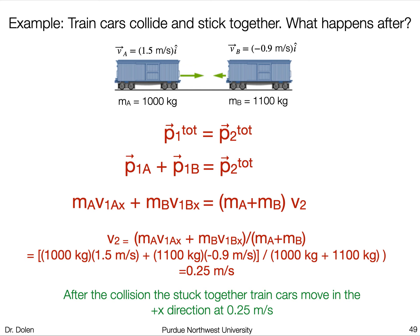Let's look at the problem picture a little bit. The train car moving to the right has a mass of 1,000 kilograms, and we've defined it to be moving in the plus x direction with a speed of 1.5 meters per second. Train car B is moving to the left, which we define to be the negative x direction, so it has a negative velocity of -0.9 meters per second in the negative i-hat direction, and it has a mass of 1,100 kilograms.